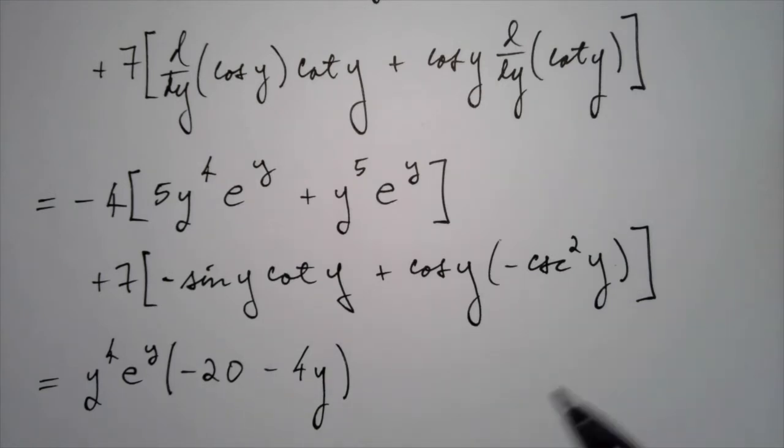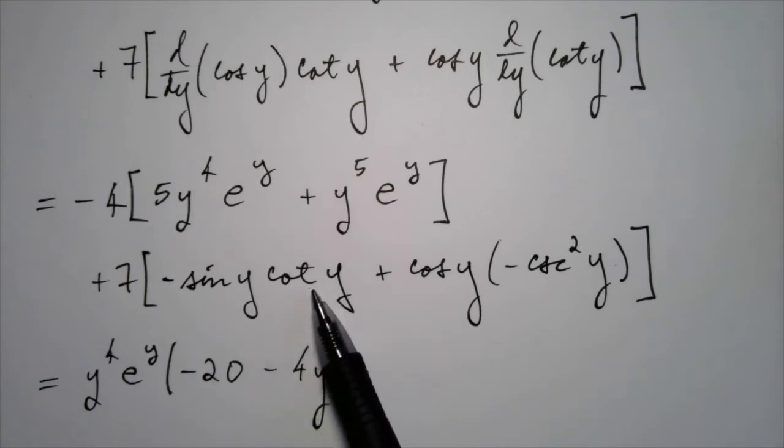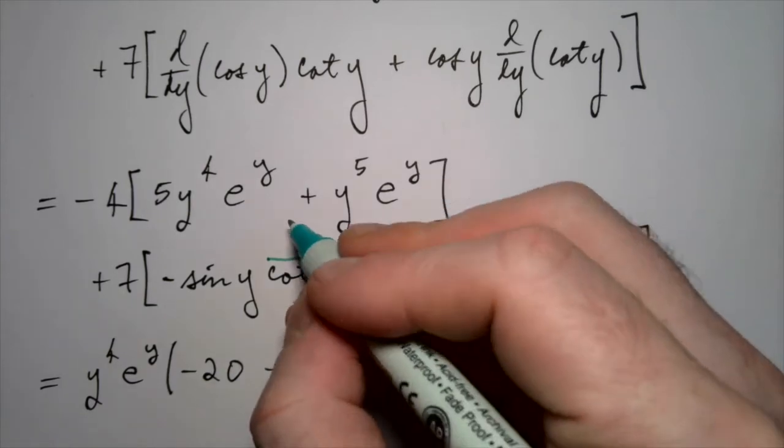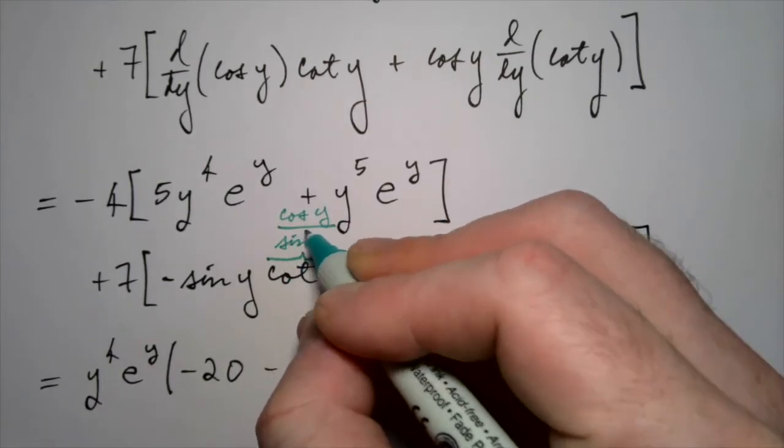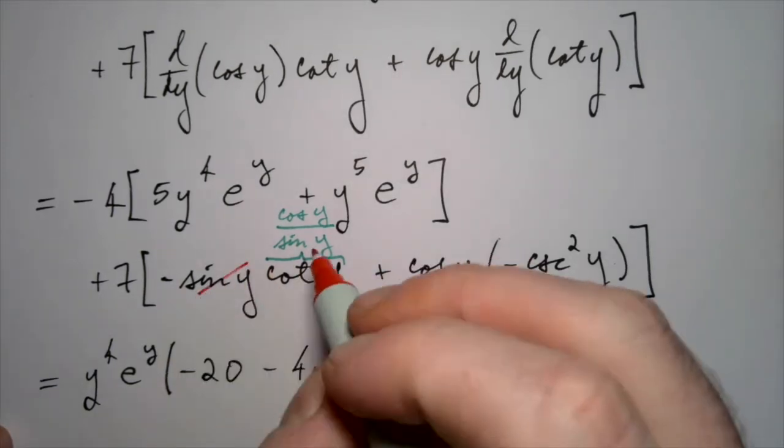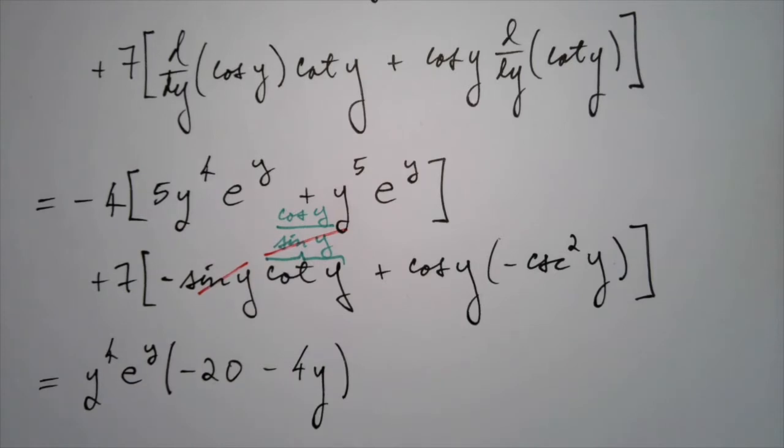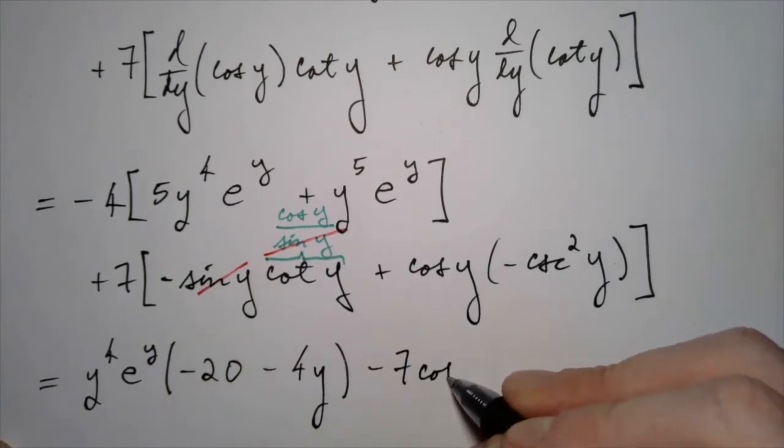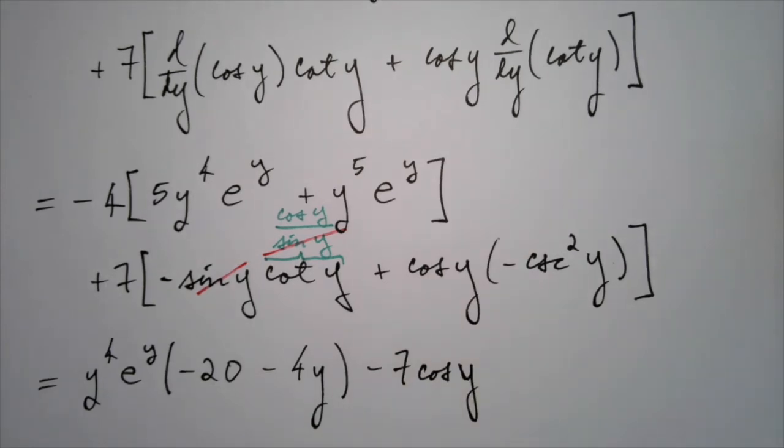Let's see. Is there any cancellation that happens here from trig identities? Cotangent is cosine over sine, right? So if we multiply by sine, the sines are going to cancel. So that one's going to turn out pretty nice. Cotangent, that's cosine divided by sine. So that sine in the numerator is going to cancel with the sine that it's being multiplied by. And we're just left with cosine in that case. So we have minus cosine. That's being multiplied by seven. We got minus seven cosine of y.